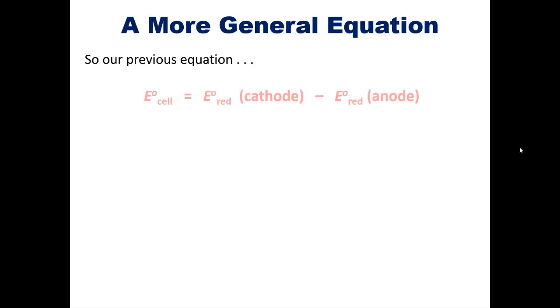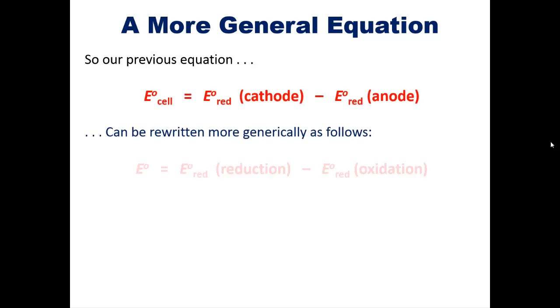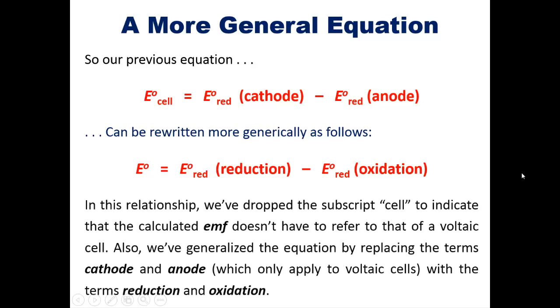At this point, then, our previous equation, the one shown here, can be rewritten more generically as this one. The overall reduction potential for any process is going to be equal to the potential of reduction minus that of oxidation. In this relationship, we've dropped off the subscript cell to indicate that the calculated EMF doesn't have to refer to that of a voltaic cell. In other words, it could potentially apply to any redox reaction.